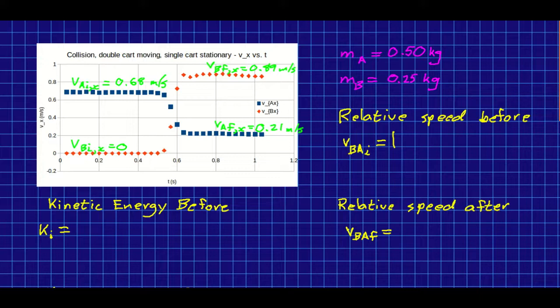So let's get this relative speed. This is the relative speed of A relative to B, and that's easy because this one is 0 and the other one is 0.68, so that just comes out to 0.68 meters per second.